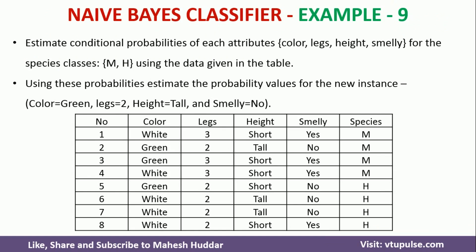In this case, we have been given a dataset with 8 examples and 4 attributes, namely color, legs, height, and smelly. Species is the target variable. Given this data, we have to classify a new example where color is equal to green, legs is equal to 2, height is equal to tall, and smelly is equal to no — into one of the classes, either M or H.